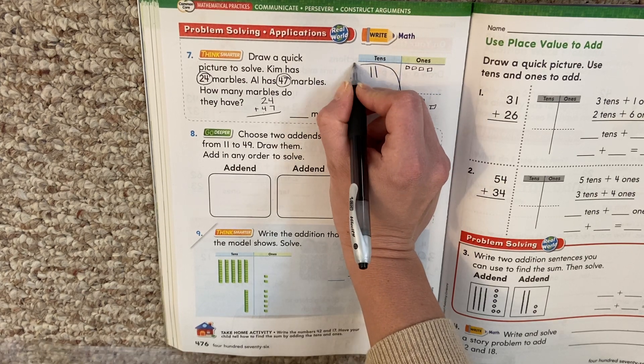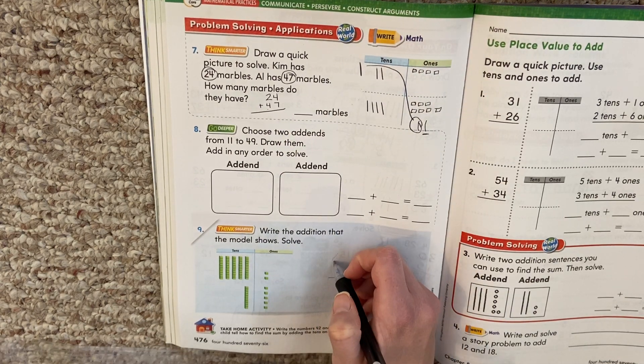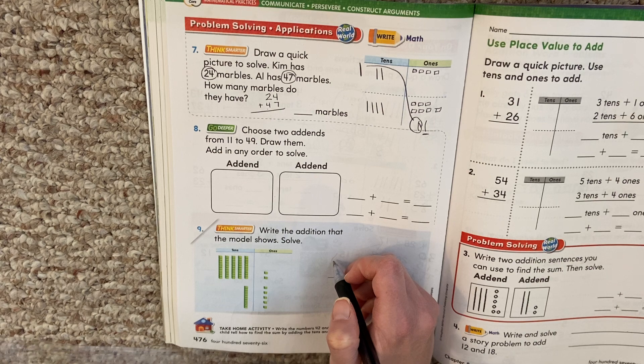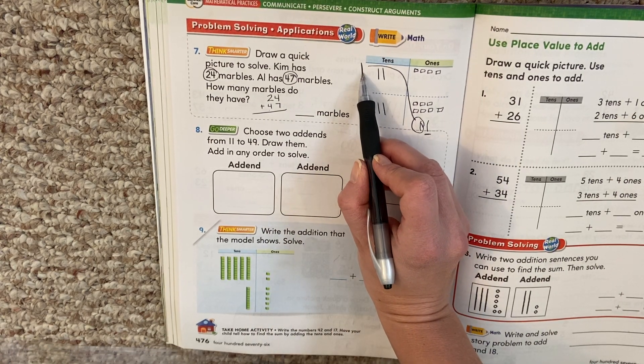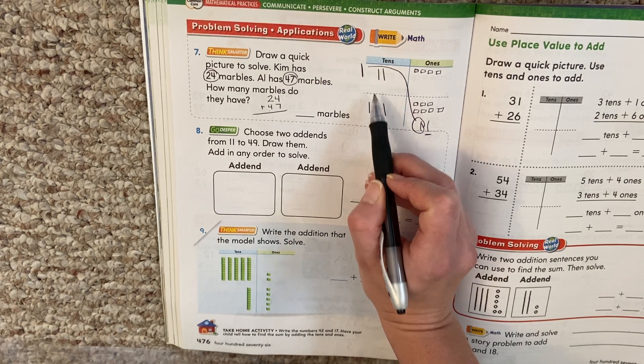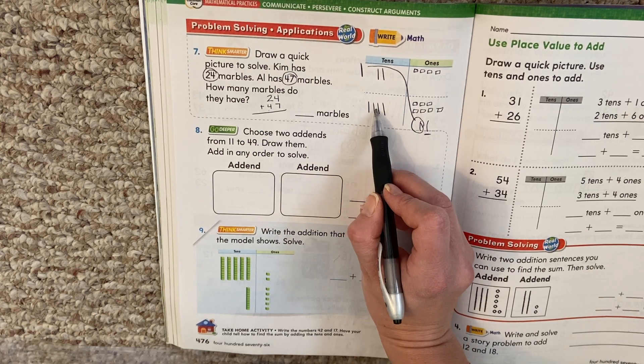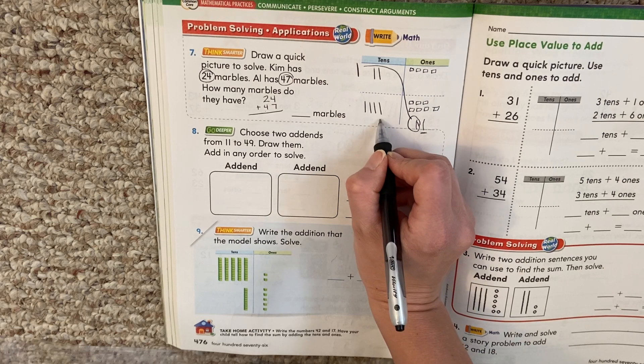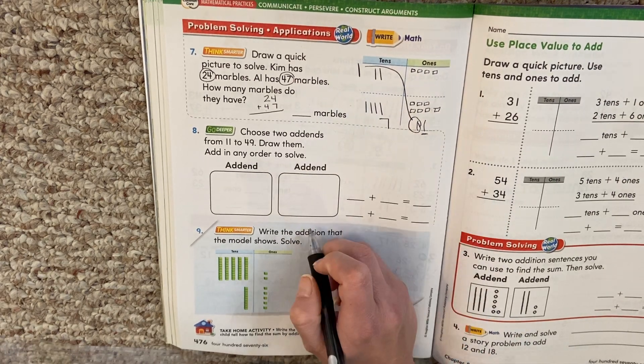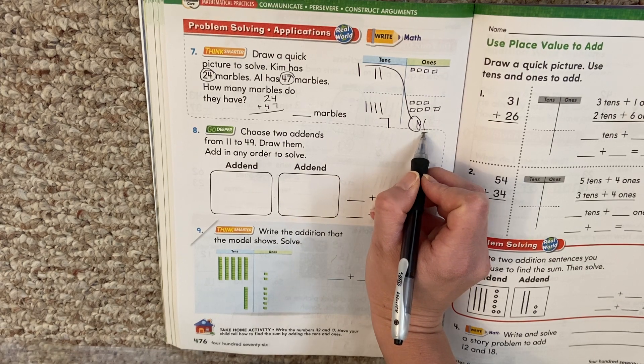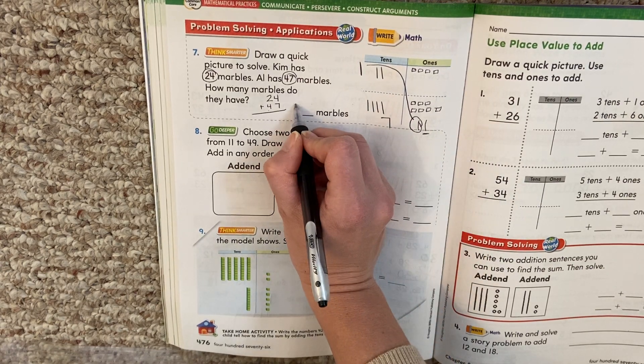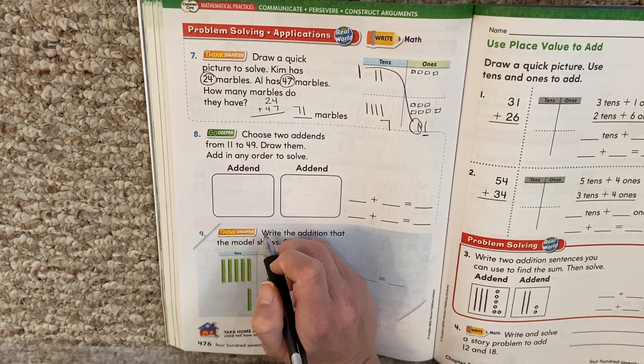Now we see how many tens do we have. One, two, three, four, five, six, seven. So what number do we make? Seventy one. Seventy one marbles.